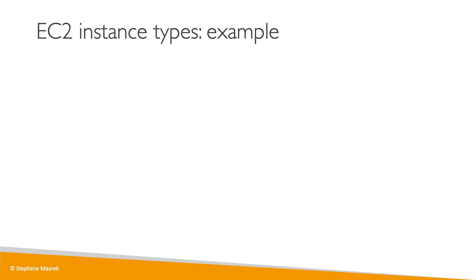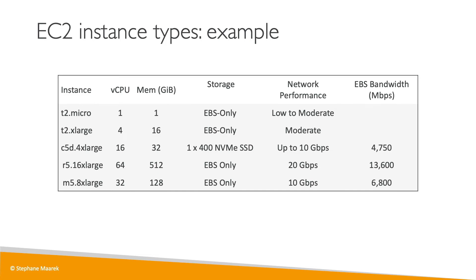So what types of instances do we get for EC2? There are hundreds and hundreds of EC2 instance types, but here are five examples. The first is a T2 micro — very simple. It has one vCPU and one gigabyte of memory. Storage is only for EBS and it has low to moderate network performance. If we stay in the T2 family but go to T2 xlarge, we get four vCPUs, 16 gigabytes of RAM, and moderate network performance.